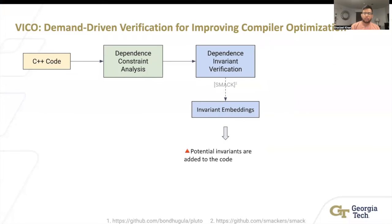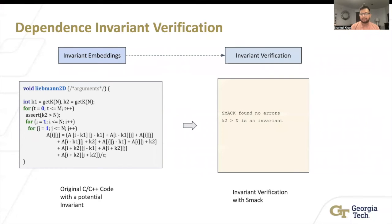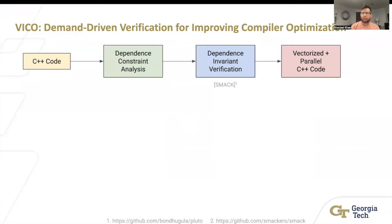Once we have our constraints, what we do is we try to embed them into the code and use SMACK to verify them. For example, what we did here is that basically we add an assert statement at k2 minus 1 less than n. What happens typically is that once you include the SMACK library in the LLVM IR, SMACK will extract this assert and make it into a SMACK assert. Basically, it will run over some particular unrolling for a loop that you define. We did a very high number and it found no errors. So with a very high justification, we can say that k2 minus 1 less than n is an invariant.